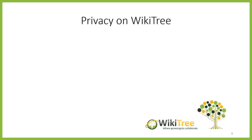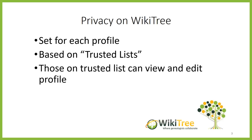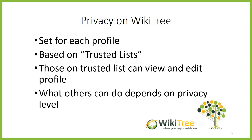WikiTree is a bit more nuanced. On WikiTree, you set the privacy setting for each profile. WikiTree's privacy system is based on what's called trusted lists. People on the trusted list have full viewing and editing rights on the profile. What users outside of the trusted list can see and do depends on the privacy level of that profile.